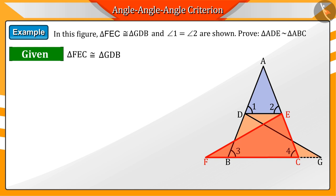From the question, we know that triangles FEC and GDB are congruent and angles 1 and 2 are equal.